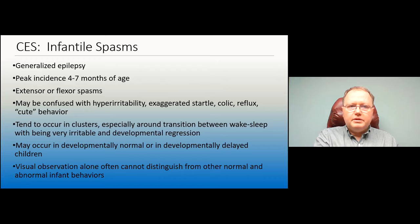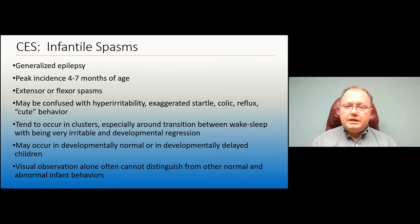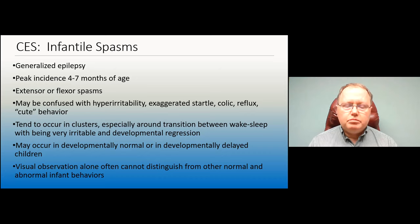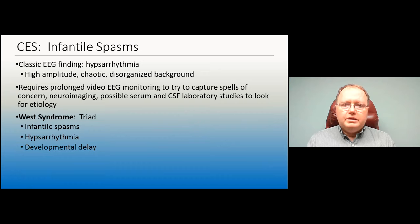Infantile spasms is a generalized epilepsy with peak incidence between four and seven months of age. They have extensor or flexor spasms — what distinguishes these from a startle is that the child holds the posture for a couple of seconds and then relaxes, and they may do it over and over again, sometimes 500 times a day in clusters. They are more common around sleep-wake transitions. Clinically we often cannot visually distinguish them from other movements without an EEG.